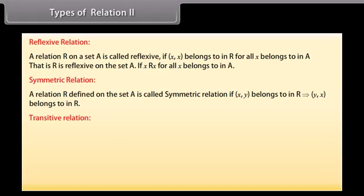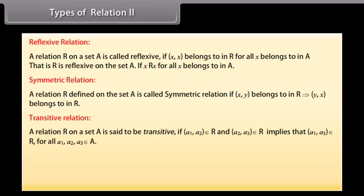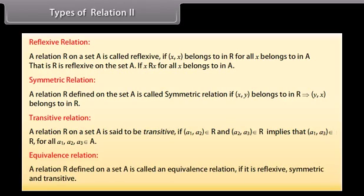Transitive relation: A relation R on a set A is said to be transitive if (A1, A2) belongs to R and (A2, A3) belongs to R implies that (A1, A3) belongs to R, for all A1, A2, A3 belonging to A. Equivalence relation: A relation R defined on a set A is called an equivalence relation if it is reflexive, symmetric, and transitive.